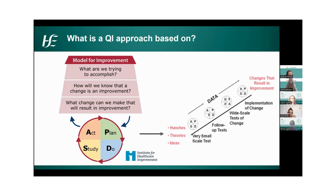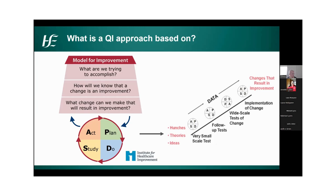The model for improvement is an approach or framework that we use to drive continuous quality improvement. It was adopted by the Institute for Healthcare Improvement and it's essentially a method for structuring an improvement project, developing and testing an idea using a really simple framework. The model consists of two parts: the first three questions help us define what we want to achieve, what ideas might make a difference, and what we'll measure to understand if the change is actually an improvement. The second part is the PDSA, or plan-do-study-act cycle, which outlines the steps for the actual testing of change ideas.